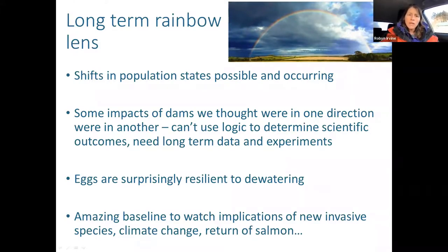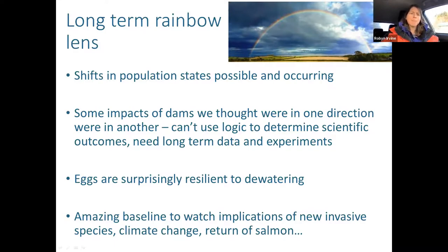Can this dewatering finding extend to shore spawners in Kootenay Lake? Greg Utzig asks. I wouldn't say so, Greg — it's a super different system, different species in fact. Whether you're talking about kokanee or shore spawning rainbow, I don't know the groundwater and hydrological encounters well enough between those systems. I wouldn't want to extrapolate to a different system like Kootenay Lake.